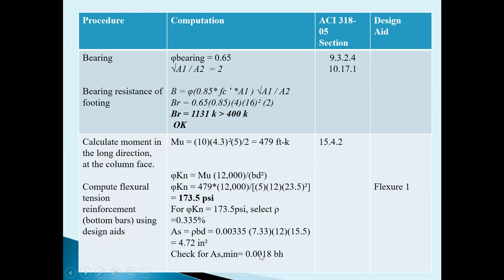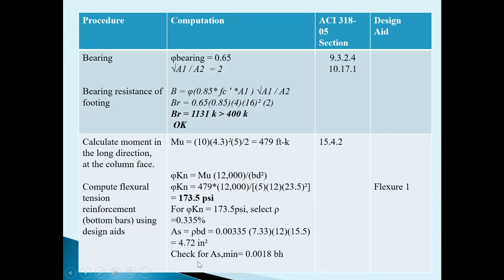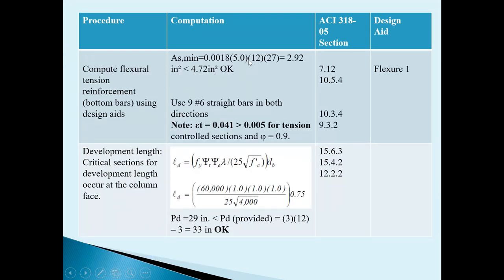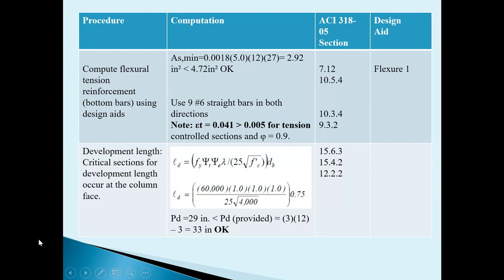We also need to check the minimum steel criteria: As_min = 0.0018 × B × H. For the short direction, B = 5 feet = 60 inches and H = 27 inches, giving As_min = 2.92 square inches. As per the moment calculation, the area required is 4.72 square inches, so we use the worst condition and provide 4.72 square inches.